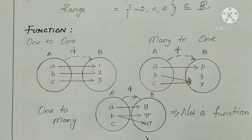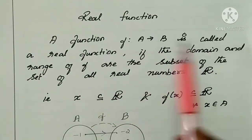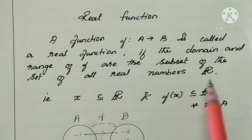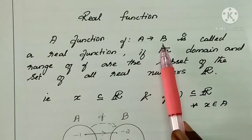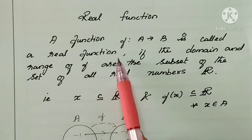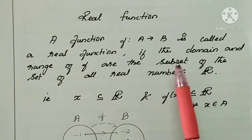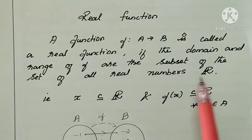If you have any doubts about the function, you can check the old videos in the description. F is the function from A to B. If the domain and range of F are a subset of the set of all real numbers, F is a real-valued function. A to B is connected: A is the domain, B is the co-domain. It is called a real function.